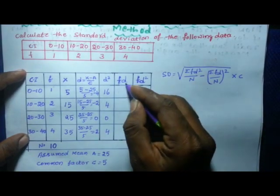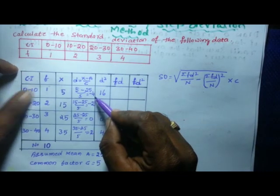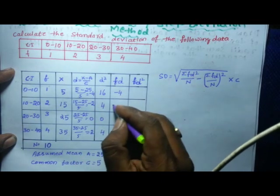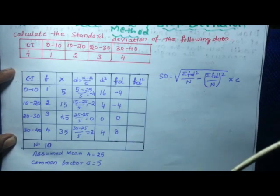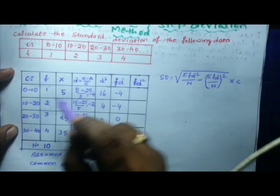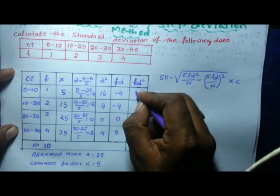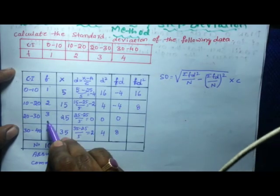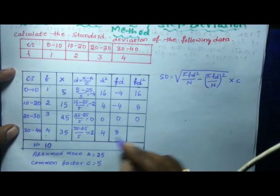Next, find the FD column by multiplying frequency F by D. So 1 into minus 4 is minus 4, 2 into minus 2 is minus 4, 3 into 0 is 0, and 4 into 2 is 8. Then find the FD squared column by multiplying F by D squared: 1 into 16 is 16, 2 into 4 is 8, 3 into 0 is 0, and 4 into 4 is 16.